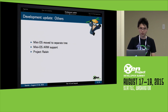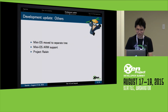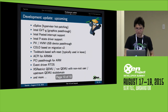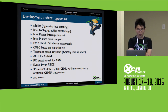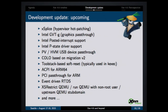We also moved the MiniOS tree out to a separate repository, as a move to foster the unikernel movement. MiniOS ARM support is ready to apply but not yet applied. There is another project called Project Raisin, which Stefano is going to cover tomorrow. These are the things coming in the pipeline — quite a lot — and some of them were actually quite close to being merged in this release but unfortunately missed it.